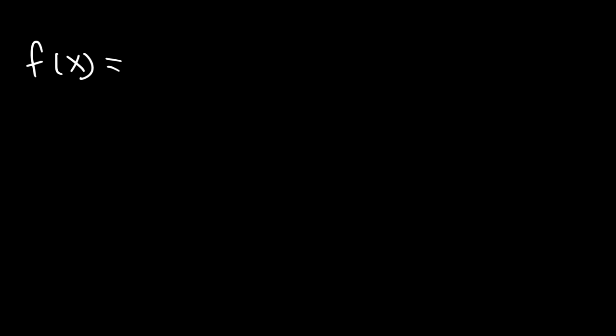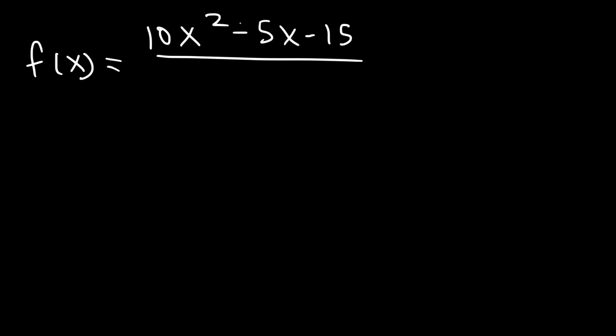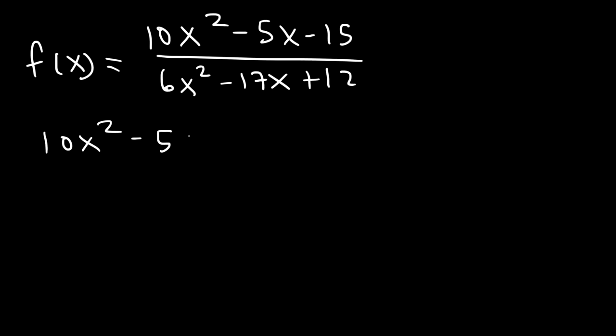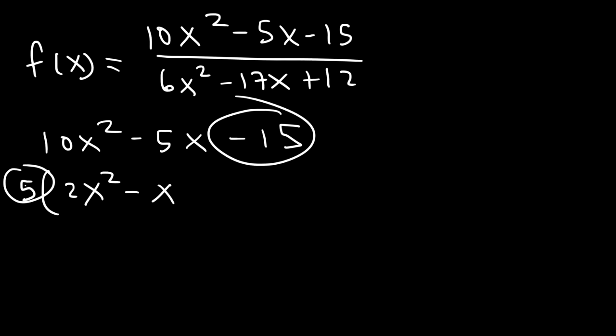Now let's look at one final example — this one might be harder than the previous ones. Let's say f of x equals 10x squared minus 5x minus 15 divided by 6x squared minus 17x plus 12. Find the vertical asymptotes. Let's start by factoring the numerator: 10x squared minus 5x minus 15. The first thing to do, if possible, is remove the GCF. The greatest common factor is 5. So 10x squared divided by 5 is 2x squared, negative 5x divided by 5 is negative x, and negative 15 divided by 5 is negative 3.